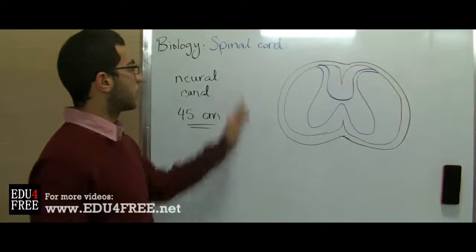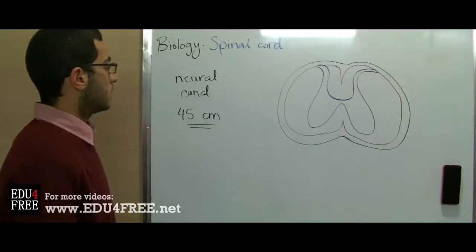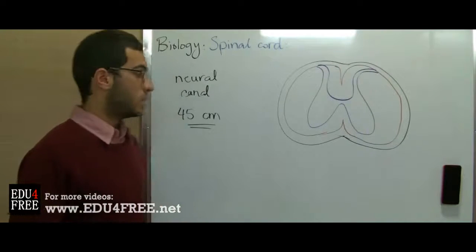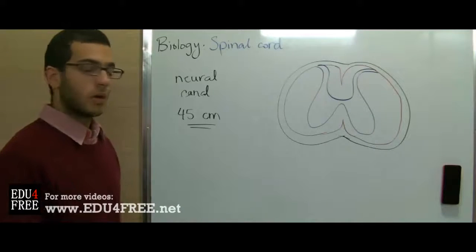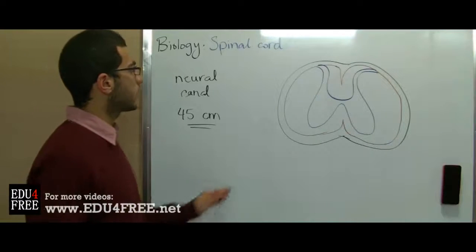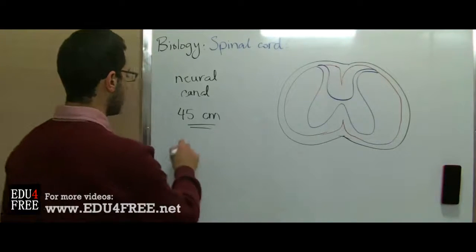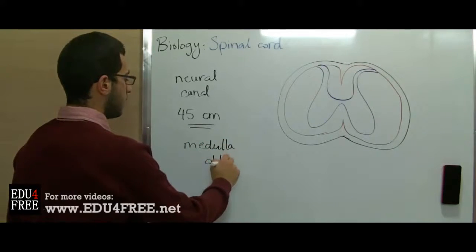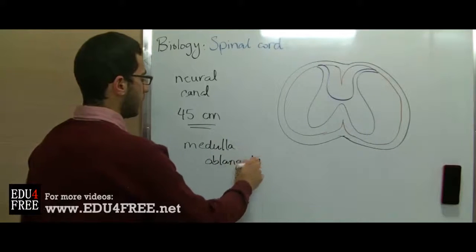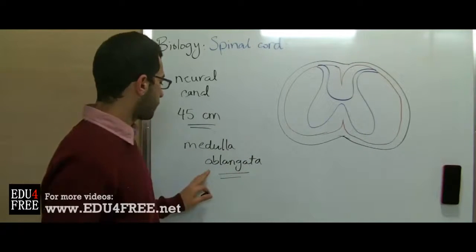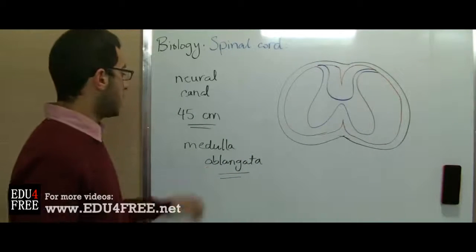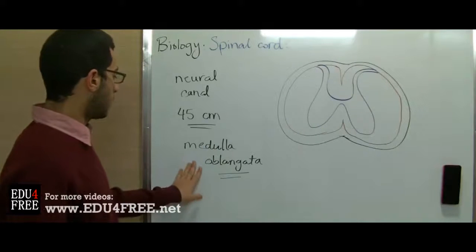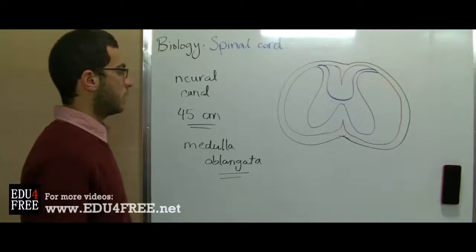The spinal cord is covered by the three same meninges which cover the brain. The spinal cord basically extends from the medulla oblongata, the lowest part of the brain. So the meninges cover the brain, then they cover the medulla oblongata, then they cover the spinal cord.